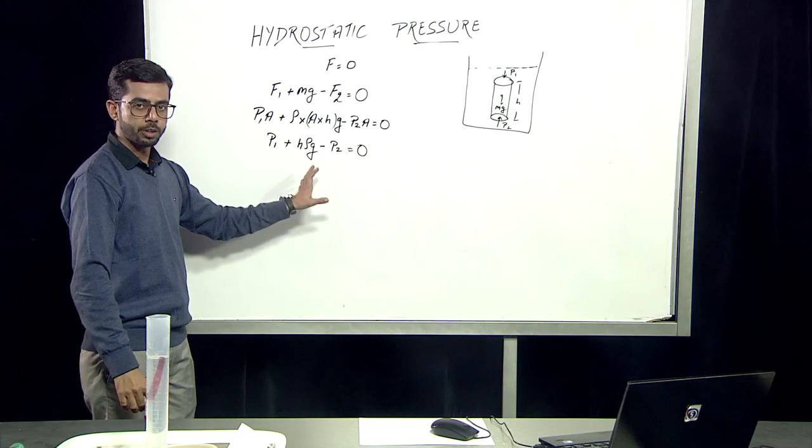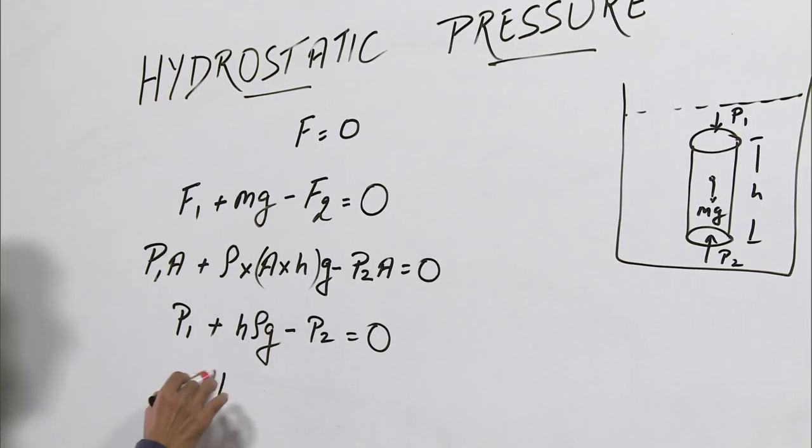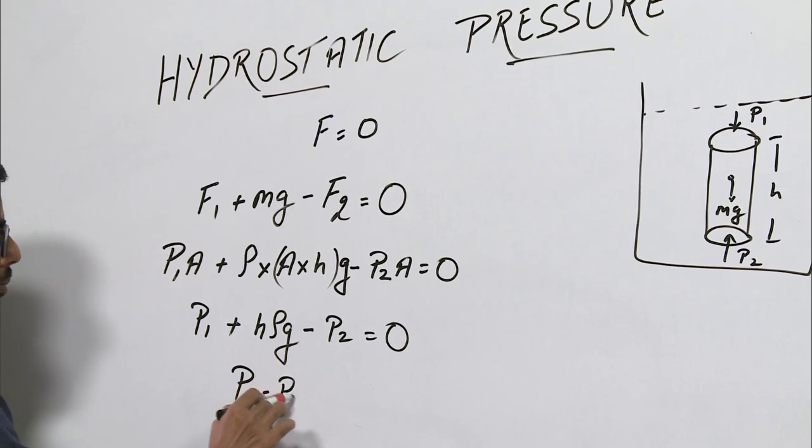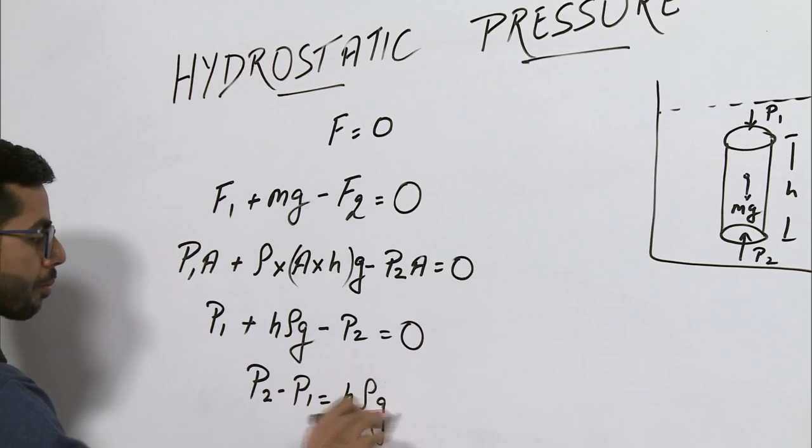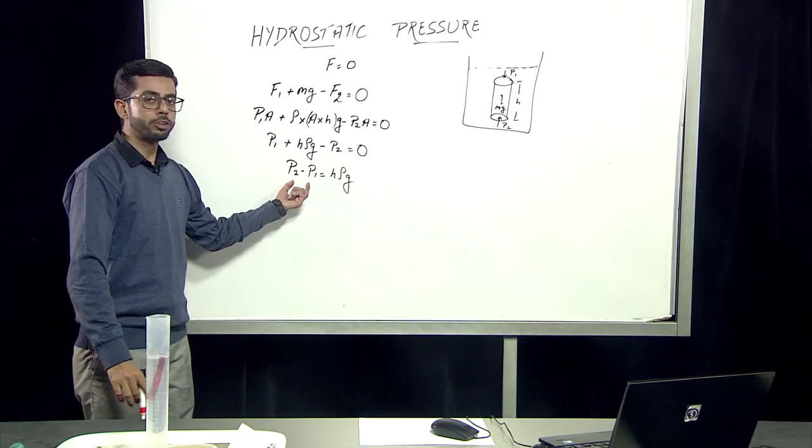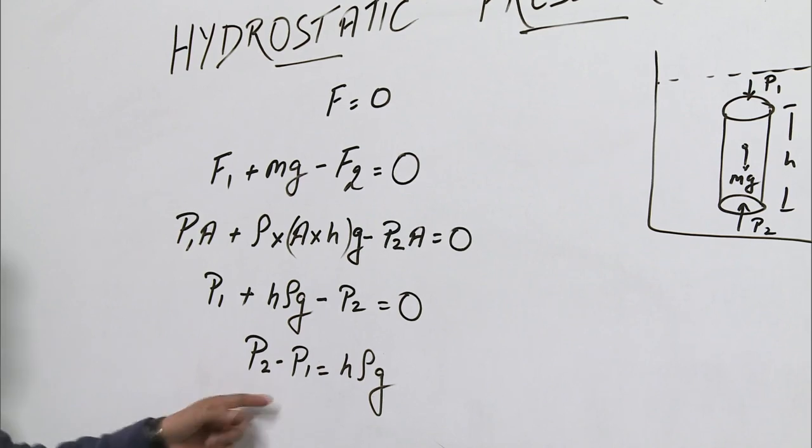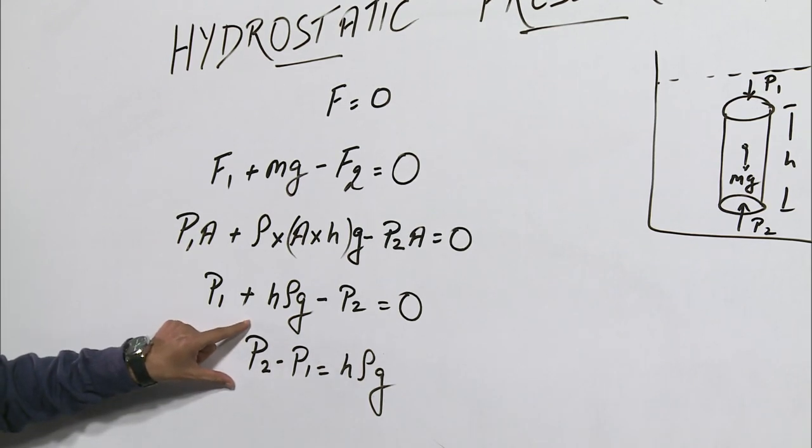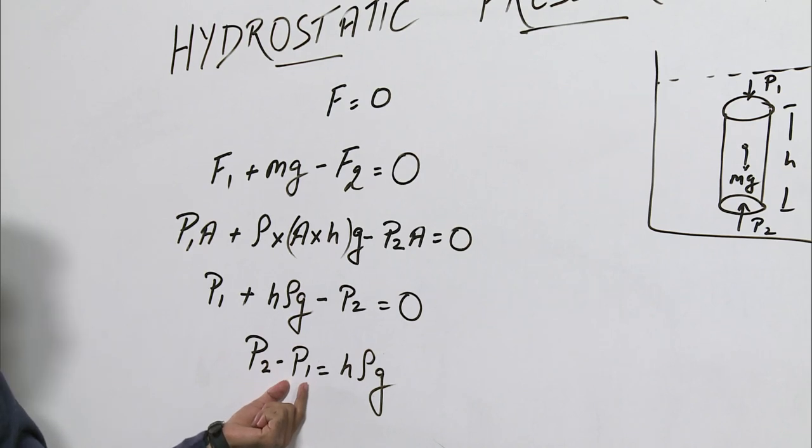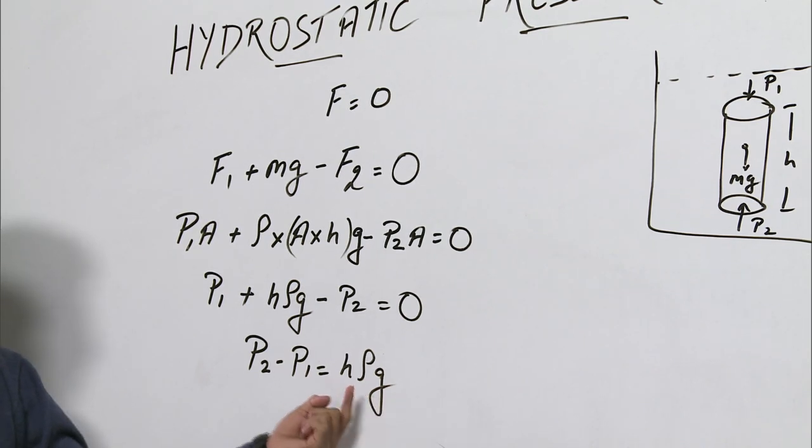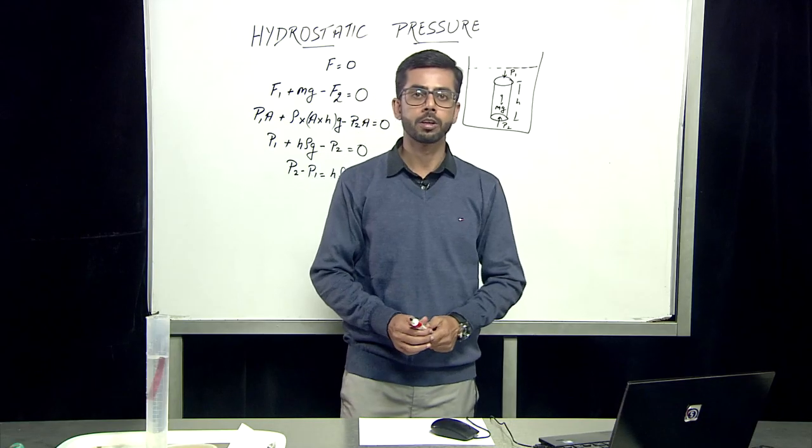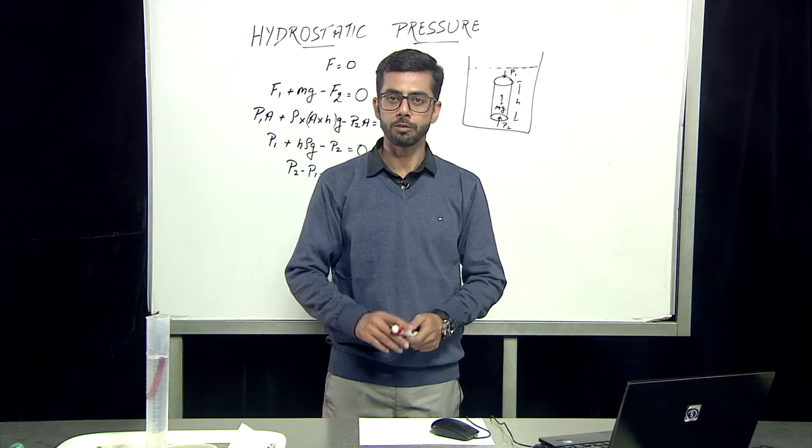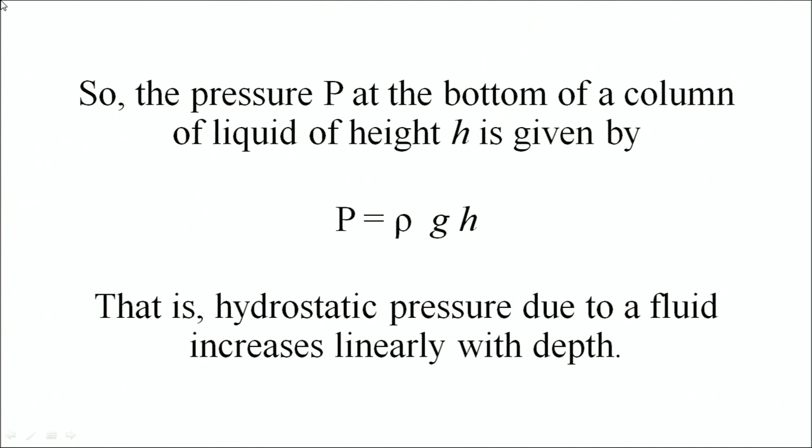And the leftover term is given by this. When we try to solve this equation, the answer is given by the pressure difference. Therefore, the pressure applied by the liquid is given by the pressure difference for the upward thrust applied by the liquid and the pressure at the upper surface area, which is the product of height of the cylindrical object, the density of the object, and the gravity applied to the object. We got the conclusion that pressure difference is given by h ρ g. And it is due to a fluid which increases linearly with the depth.